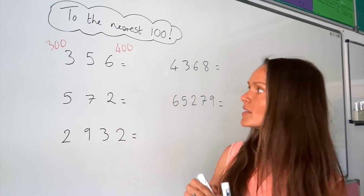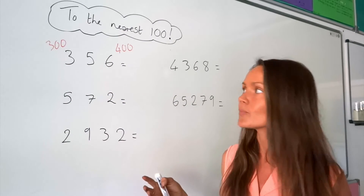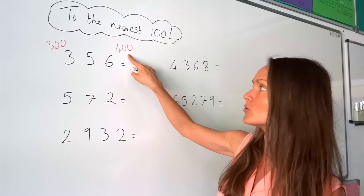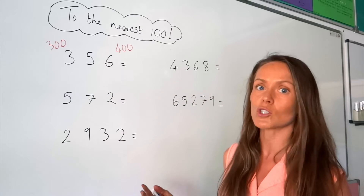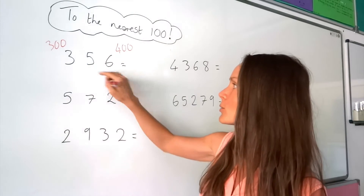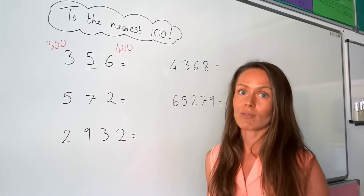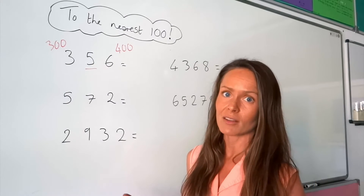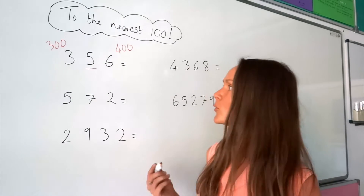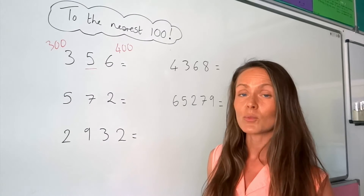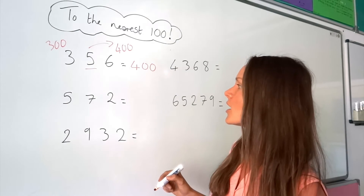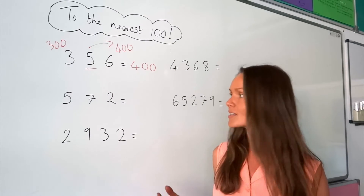You round to the one that 356 is closest to. You might already be able to see that this number is closest to 400. But if you're not sure, you need to look at the second from last digit in the number. When rounding, if you see the number five or a number bigger than five, you round up; if it's smaller than five, you don't round up. Here the digit is five, so we round up to 400.